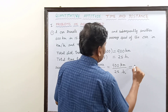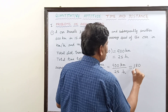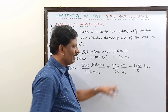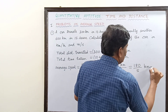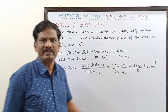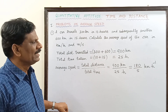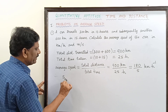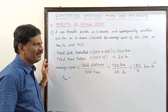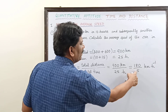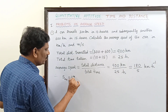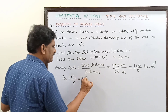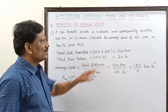Dividing: 900 divided by 25 gives us 36. Kilometer is in the numerator and hour is in the denominator, so the unit is kilometer per hour. Therefore, the average speed is equal to 36 kilometer per hour.